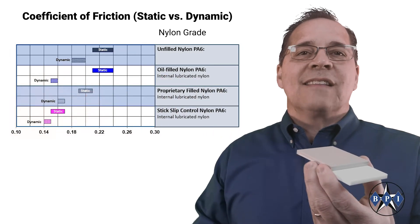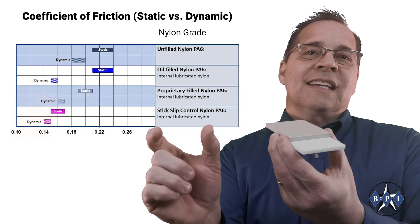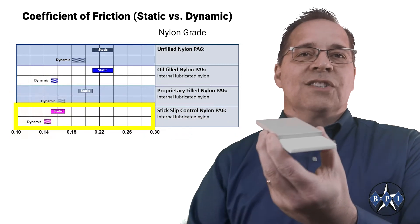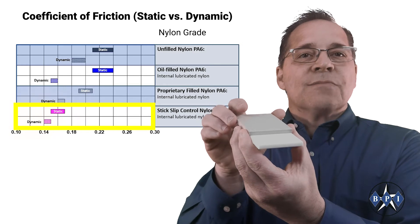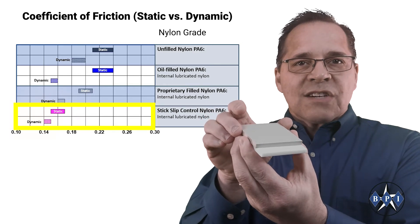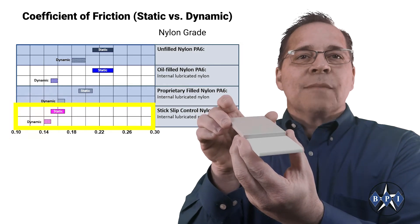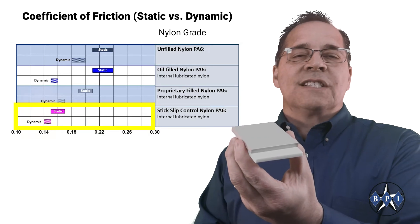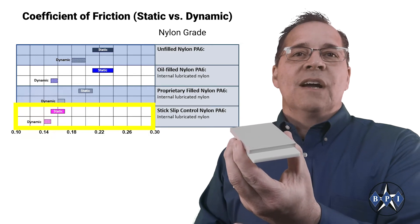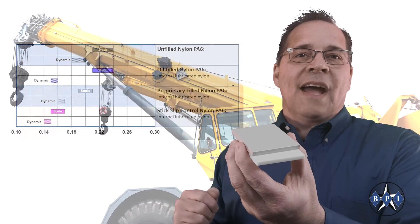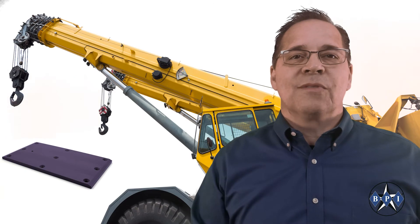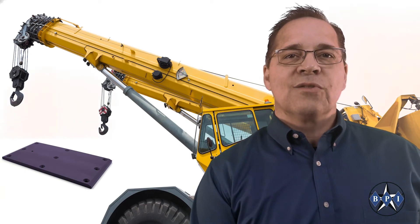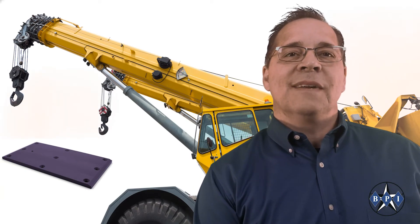To eliminate this phenomenon, you will want a static and dynamic coefficient of friction that are very close to each other, resulting in a very smooth transition from at rest to sliding motion. Materials offering low to zero stick-slip are often specified for wear pad applications in the sliding booms of construction and heavy equipment where smooth transitional movement is critical.